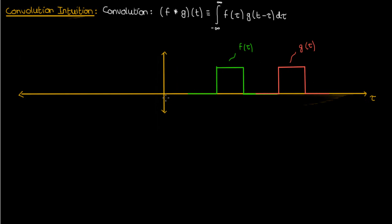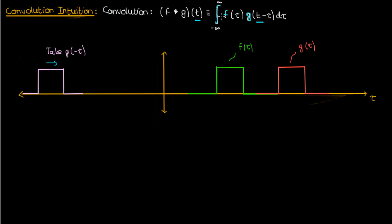The whole idea behind convolution is that we take g of negative tau — which is the reflection of g of tau along the vertical axis — and sweep it to the right according to the time t at which we're evaluating the convolution. As we're sweeping g to the right, we multiply f and g everywhere along the sweep and integrate that result from negative infinity to infinity to get the value of the convolution at time t.